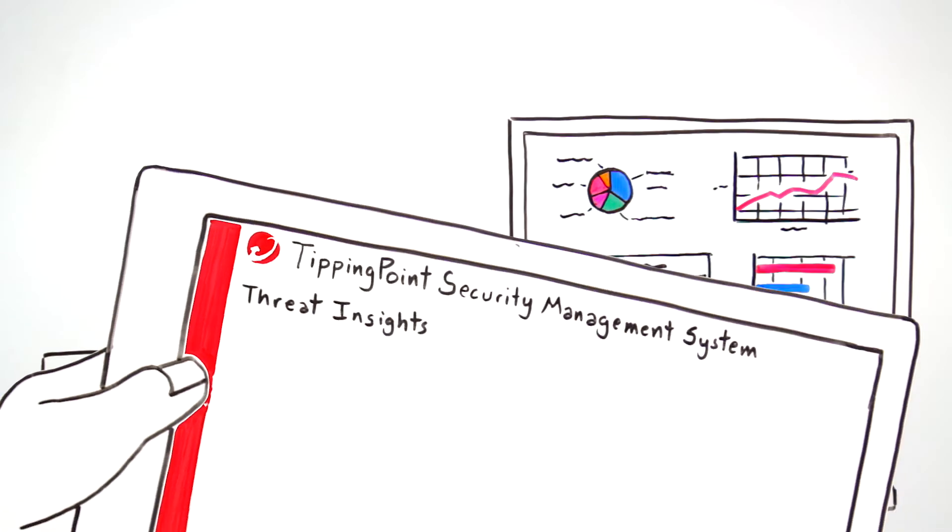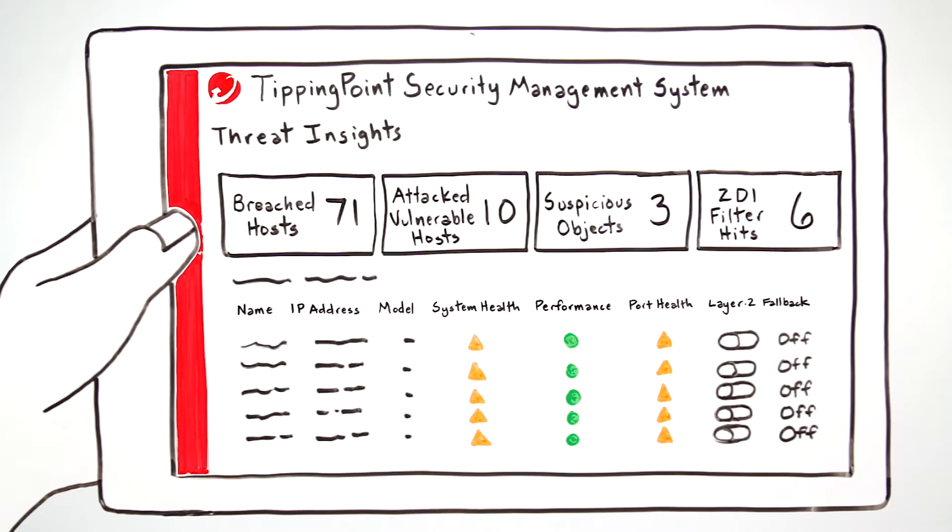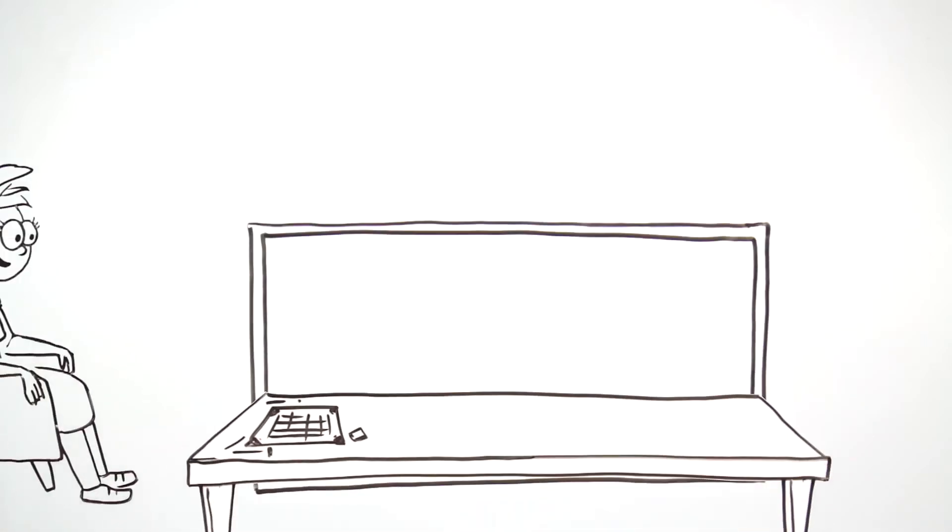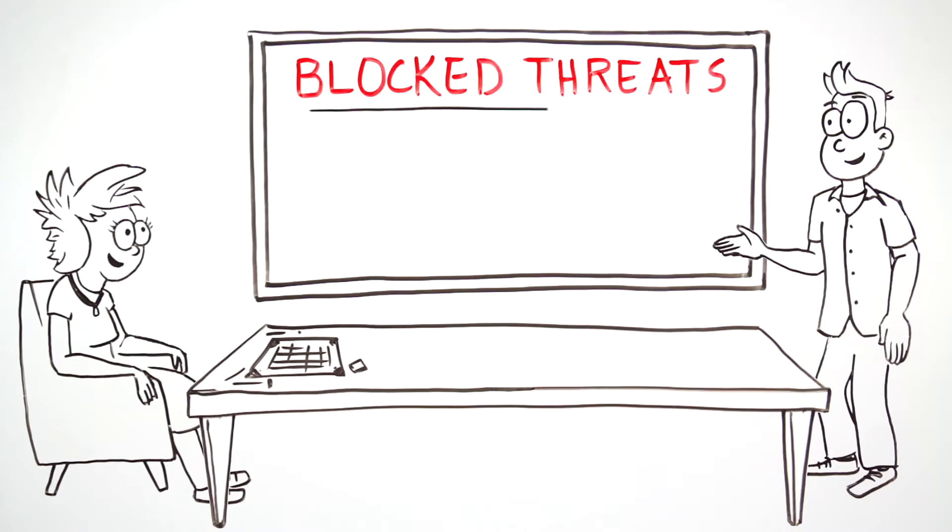With Threat Insights Aggregation Portal, Chris can focus on the big picture and identify where he's protected and where he needs to tune his policies. And when he's asked for proof that he's keeping the network secure, Chris quickly and easily reports protection from known, unknown, and undisclosed threats.